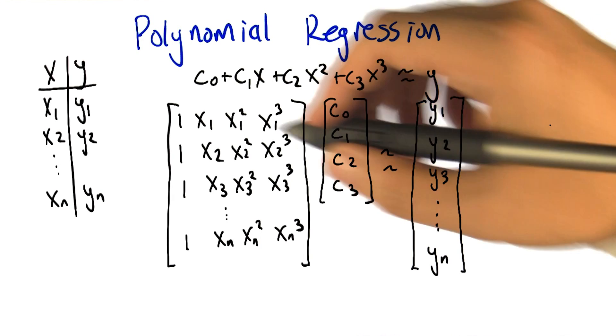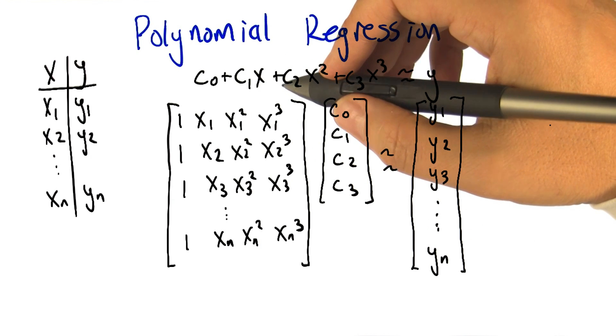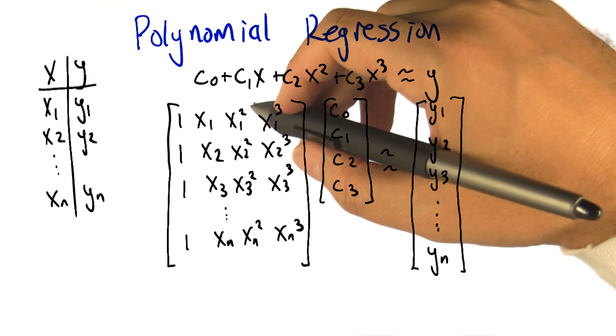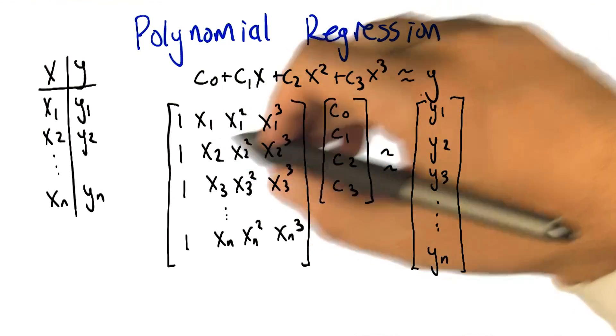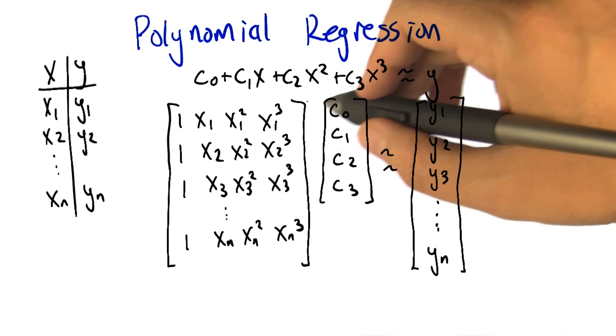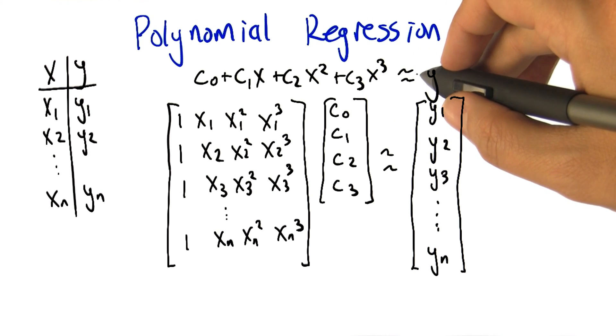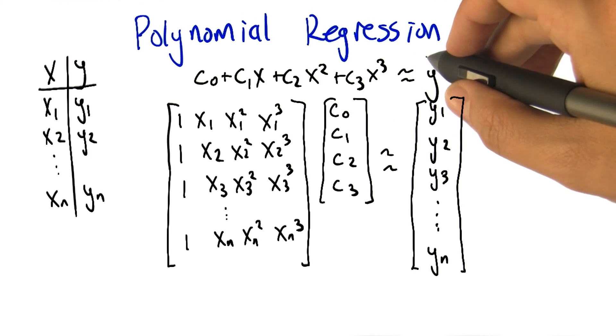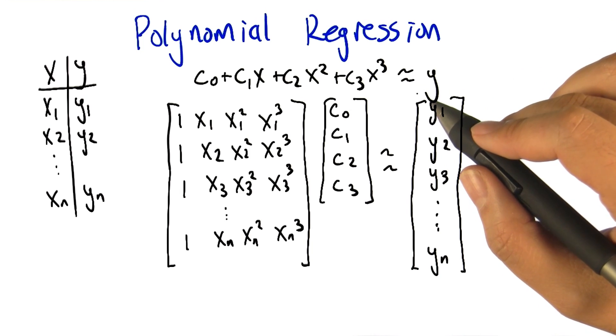All right, so we talked through how it works when you're trying to fit your data to a constant function, a zero-order polynomial. But let's talk through how you do this in the more general case. This is what I've been doing to fit various curves to the data, at least implicitly.